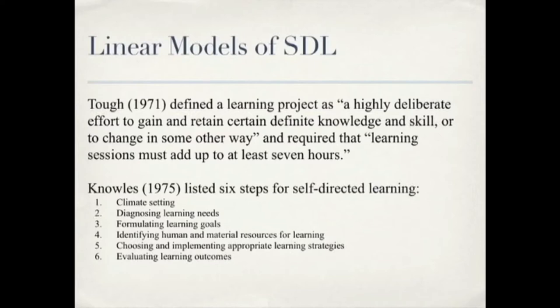Malcolm Knowles, who included self-directed learning in his conceptualization of andragogy, also argued for a linear stage process. Knowles's six steps for self-directed learning are: climate setting, diagnosing learning needs, formulating learning goals, identifying human and material resources for learning, choosing and implementing appropriate strategies, and evaluating learning outcomes. Knowles suggested a number of resources for teachers and learners to facilitate each of these steps.